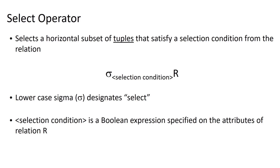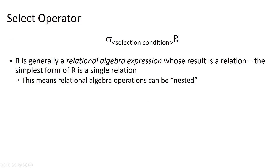SELECT returns a subset of tuples that satisfy some condition in the relation. We write the relational algebra statement using this symbol — a lowercase sigma. R represents our relation, and the selection condition is a Boolean expression specified on one or more attributes in relation R. In its simplest form, R is just a relation. However, R can also be another relational algebra expression that evaluates to a relation.